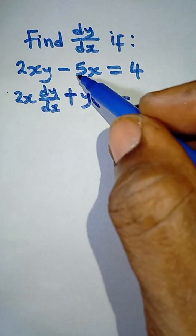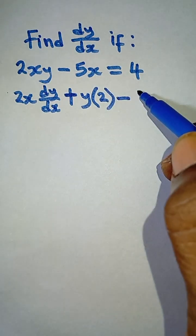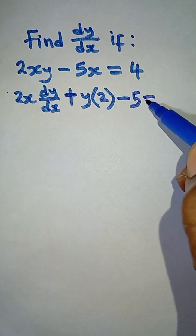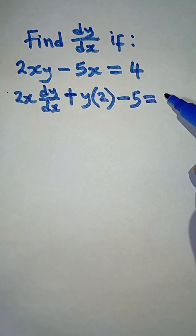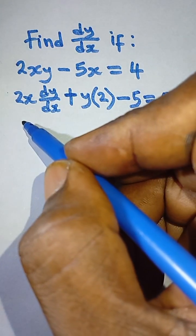Then minus the derivative of 5x is 5, and is equal to the derivative of 4, which is 0.